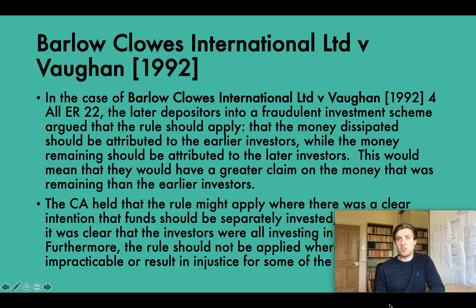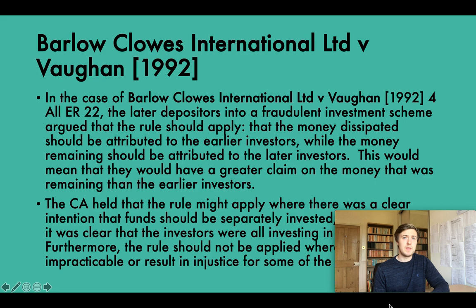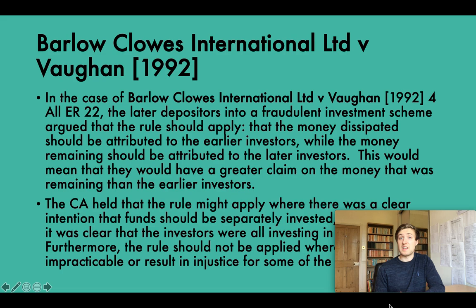A pari passu distribution allocates assets in proportion to the contribution each contributor made. In Re IMB Morgan (2004), the court held the rule in Clayton's Case would not be applied irrespective of the parties' intention if it would produce an unjust result. Indeed, the so-called rule in Clayton's Case is nowadays so often disapplied in the interest of justice that one judge has renamed it 'the exception in Clayton's Case' — from Russell-Cooke Trust Co v Prentice (2003).